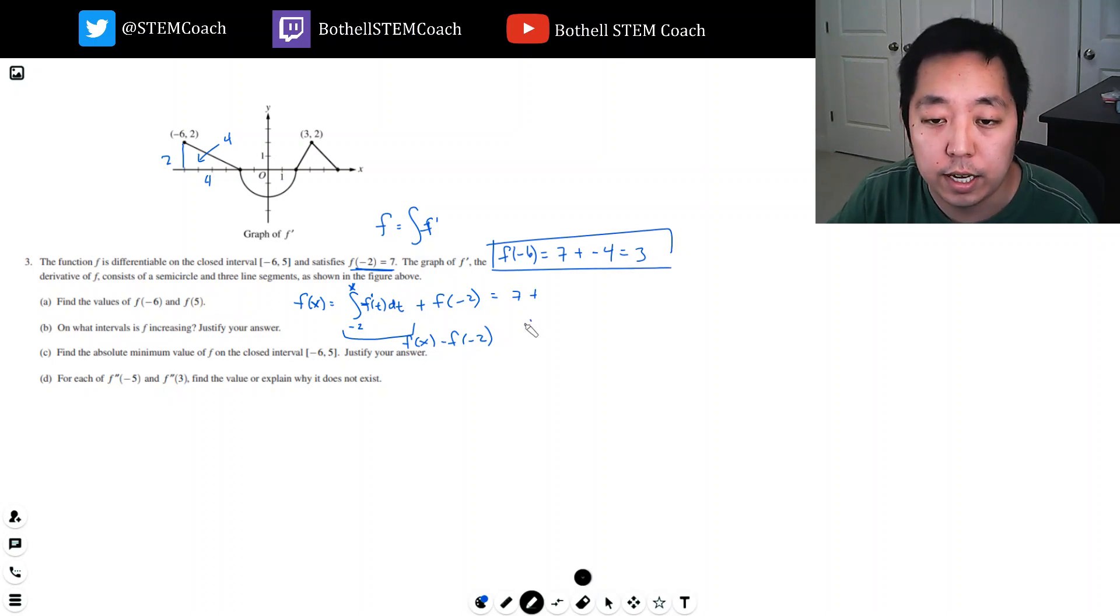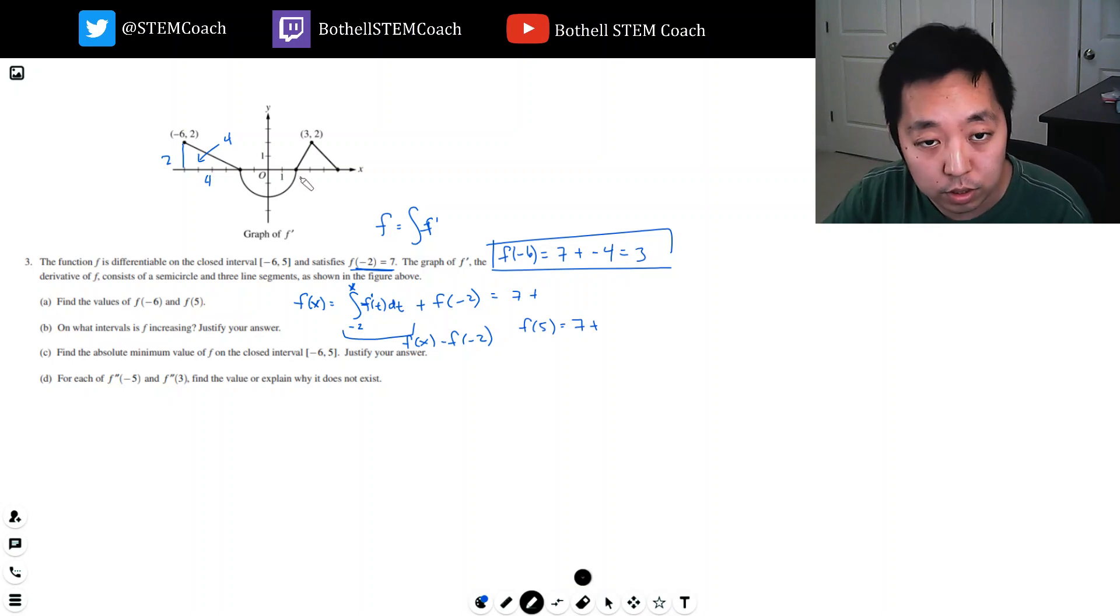So f of negative six is three, and then f of five is simply seven plus the area from negative two to five, which is this area here. Now this part under the x-axis would be negative area. This is a semicircle with radius two. So the area of the full circle would be four pi, pi r squared, but because it's only half a circle, it's two pi. Now it's negative two pi because it's underneath, so I'm going to subtract two pi here. And then this area is a triangle. The base of this triangle is width three. The height of this triangle is two. So the area under this triangle is three. So f of five equals ten minus two pi.